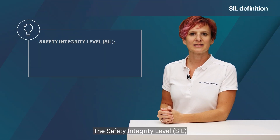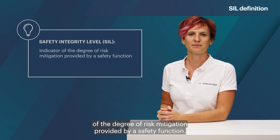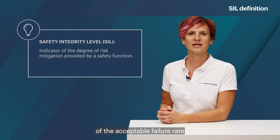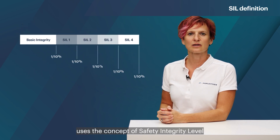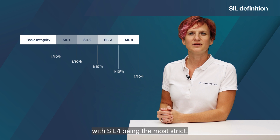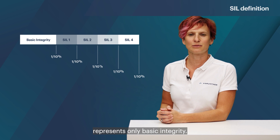The Safety Integrity Level, SIL, is an indicator of the degree of risk mitigation provided by a safety function. In other words, the SIL can be seen as an indicator of the acceptable failure rate of a safety function. The CENELEC standard uses the concept of safety integrity level based on the tolerable hazard rate. SIL is defined from SIL 1 to SIL 4, with SIL 4 being the most strict. Anything below SIL 1 represents only basic integrity.